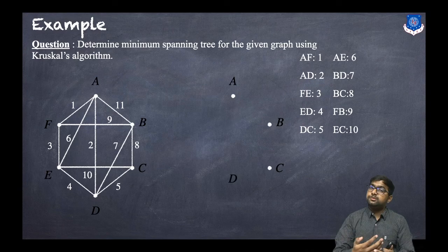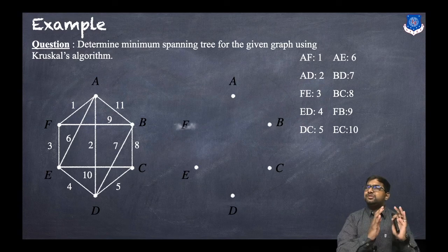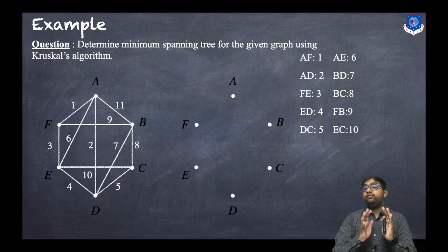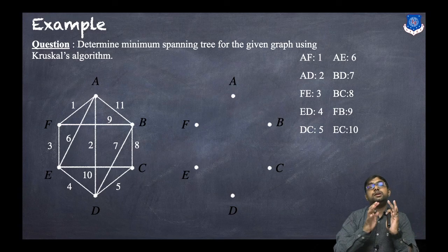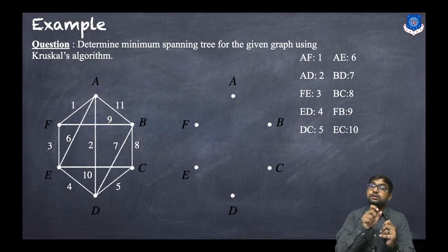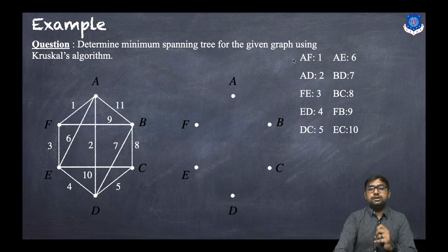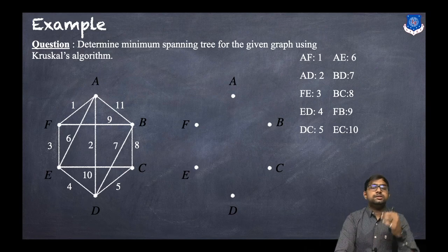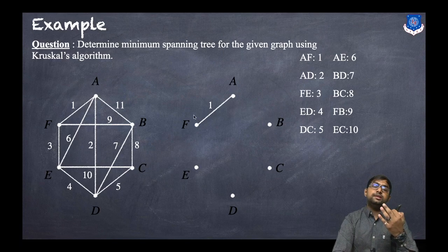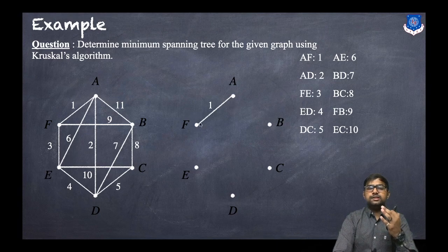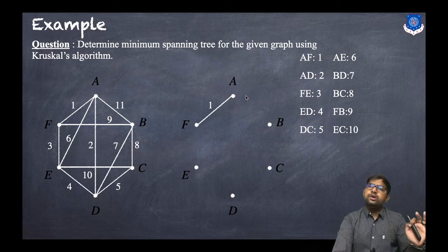Next, we draw all the vertices, since the minimum spanning tree must contain all vertices. Now, instead of selecting the first vertex as in Prim's algorithm, here we select the edge with minimum weight one by one. The first edge is AF, which has the minimum weight, so we take AF. In Prim's algorithm we had to consider adjacent vertices of minimum weight; here we don't need to worry about that.